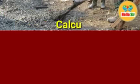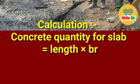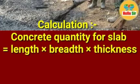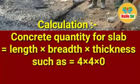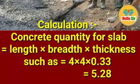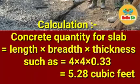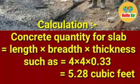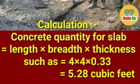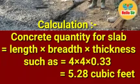Now calculate the concrete quantity for the slab. With dimensions of length 4 feet, breadth 4 feet, and thickness 0.33 feet, multiply all dimensions and it comes out to 5.28 cubic feet.